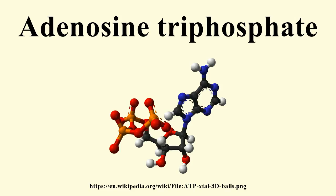Fermentation entails the generation of energy via the process of substrate-level phosphorylation in the absence of a respiratory electron transport chain. In most eukaryotes, glucose is used as both an energy store and an electron donor. The equation for the oxidation of glucose to lactic acid is: C₆H₁₂O₆ → 2CH₃CHOHCOOH + 2 ATP.